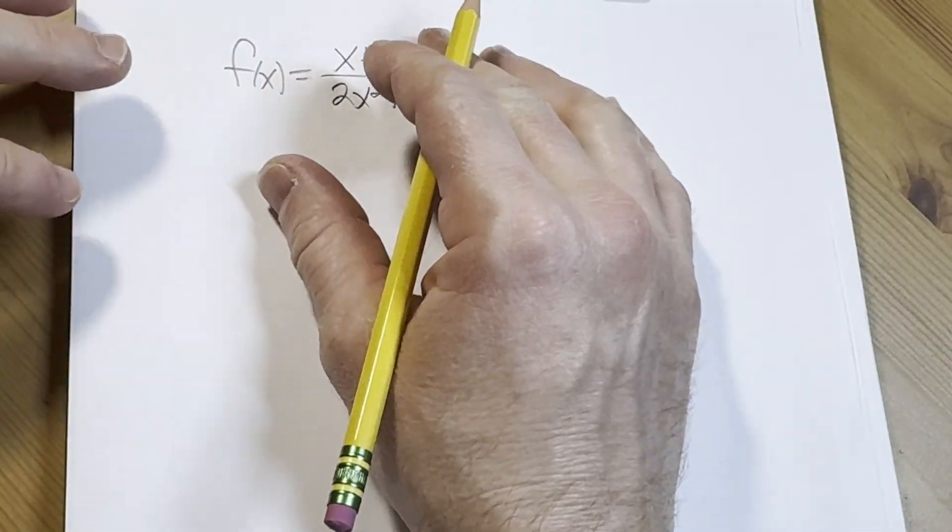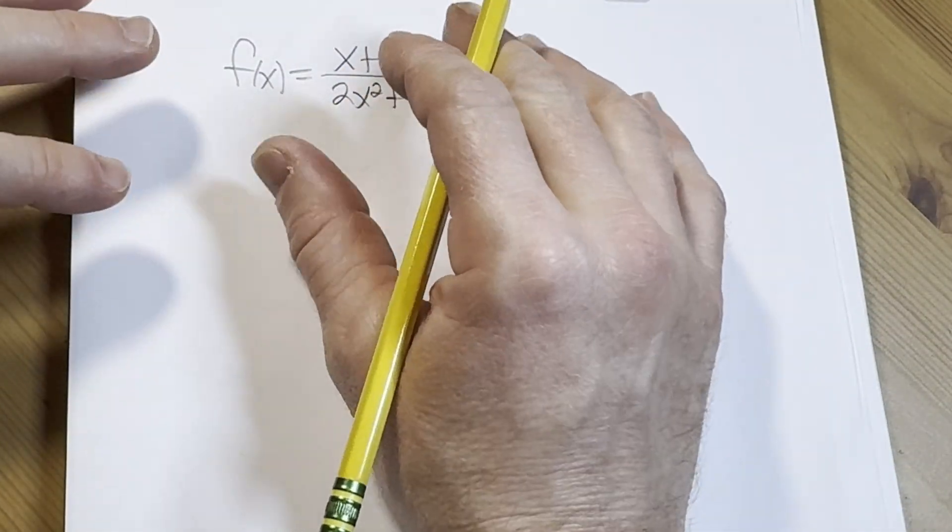Hi, in this video we're going to do an example of finding a derivative using the quotient rule.